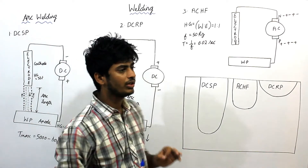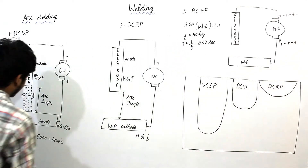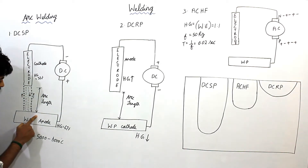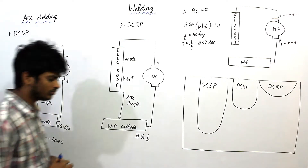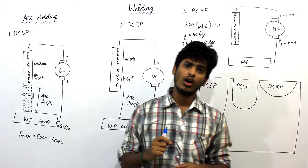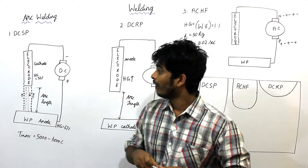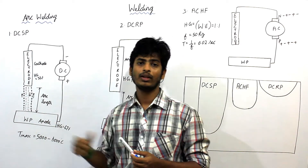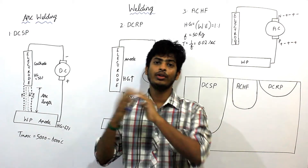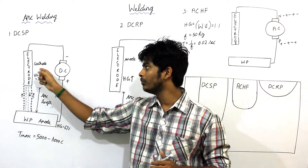This high velocity negatively charged electrons are attracted towards the anode. They are attracted towards the anode, and simultaneously from the anode, positively charged ions are produced. In between, the kinetic energy of negatively charged electrons is converted to heat energy. When the negatively charged electrons are attracted towards the anode, it produces a very large velocity, and the kinetic energy of electrons is converted to heat energy. So the heat energy produced at the anode is very high compared to heat energy produced at the cathode.